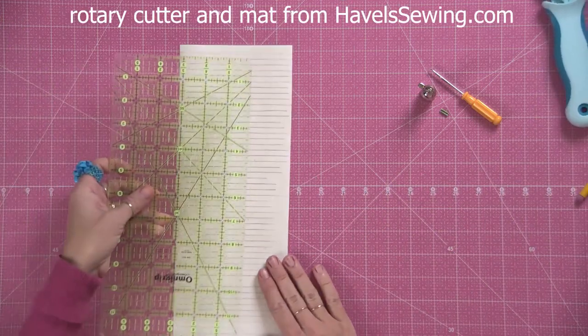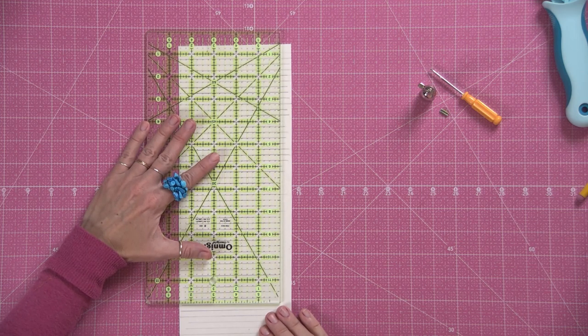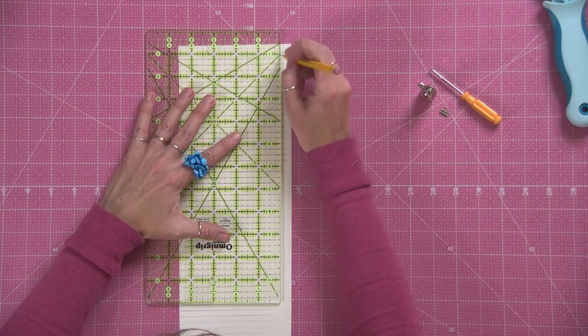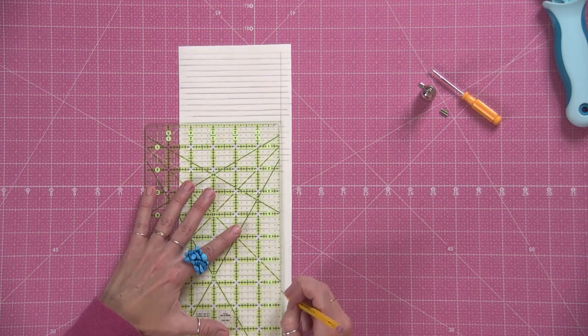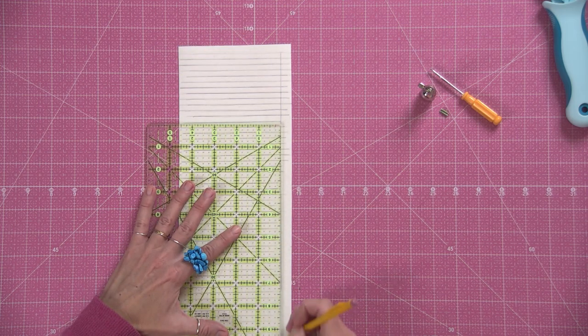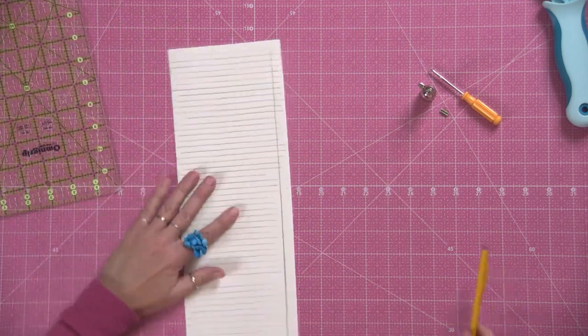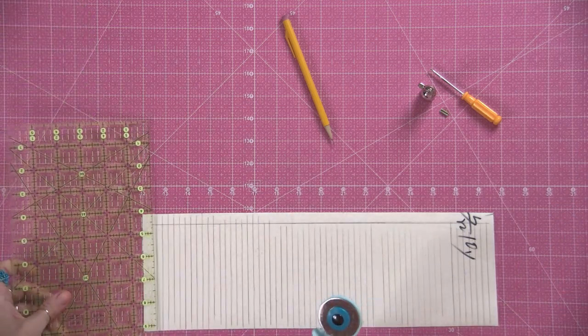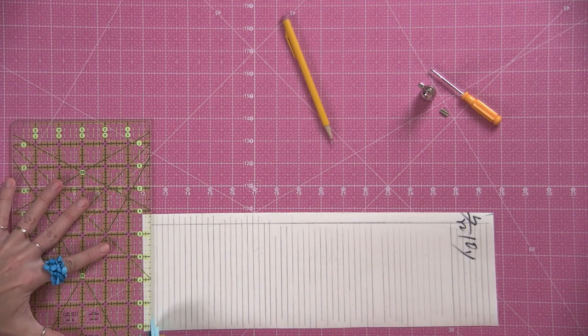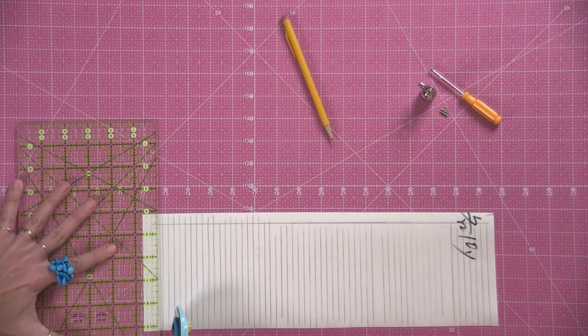Now the other thing I do for the top is I mark where to stop cutting, just so I don't forget. Knowing me, I would forget. This is about half an inch down. Don't worry too much, just keep it consistent, whatever you do. Okay, then I bring in my rotary cutter and I cut on each line.